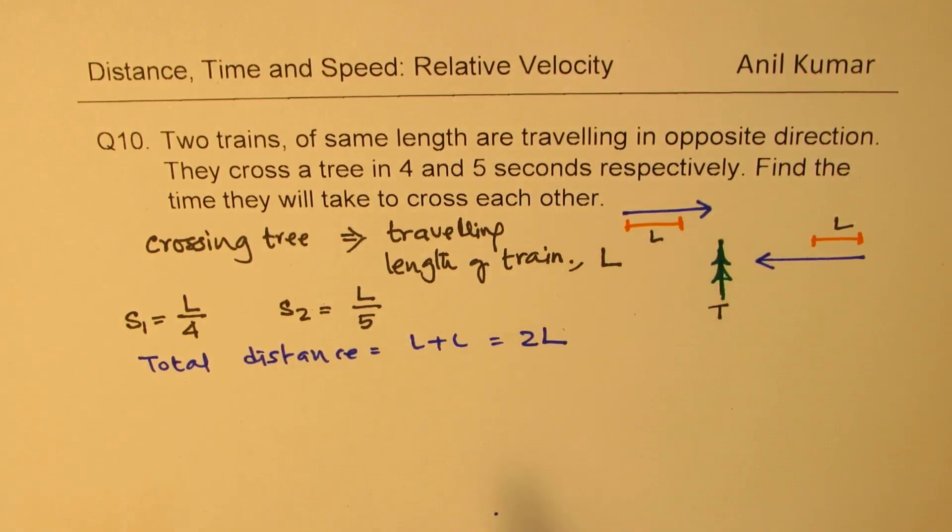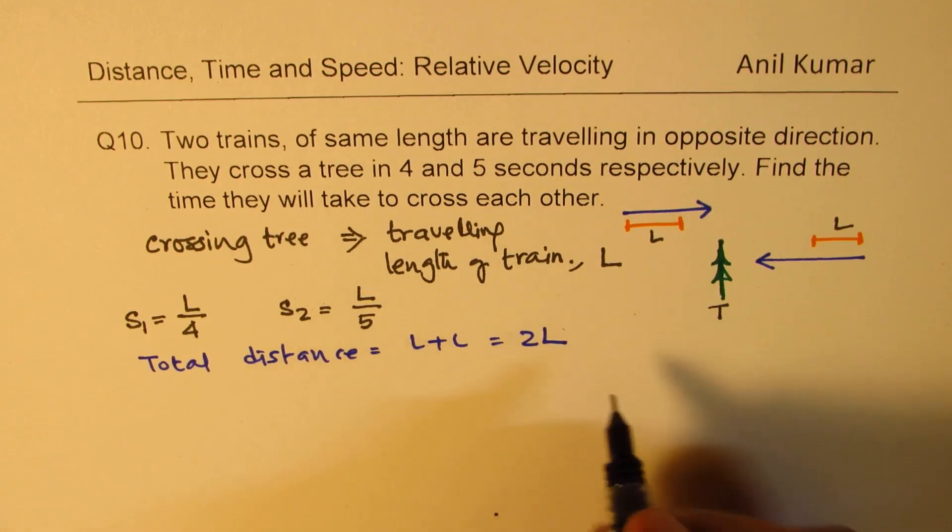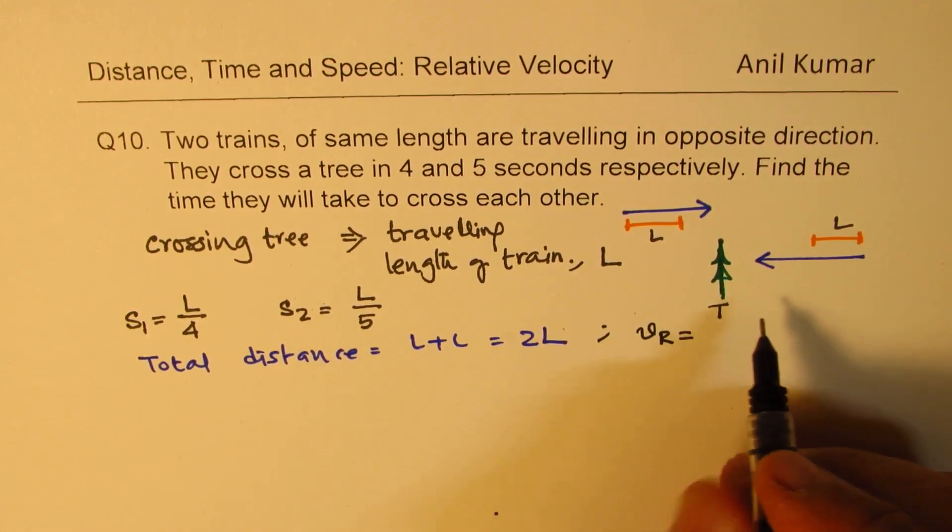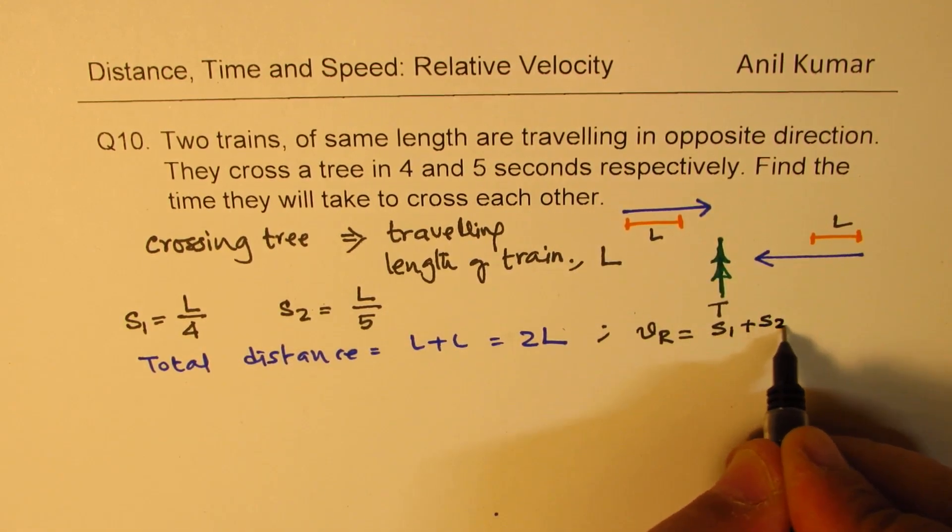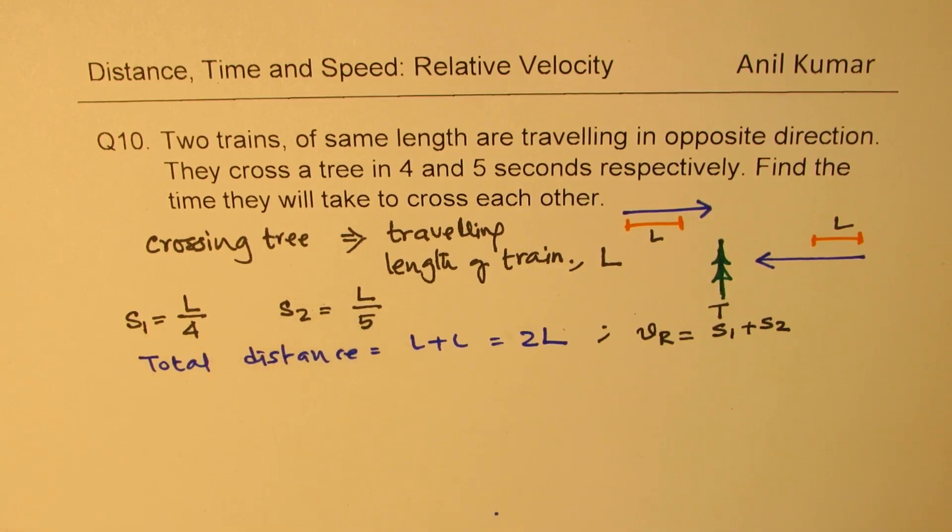Since they are moving in opposite directions, what is the relative velocity? Relative velocity will be add these two speeds, speed 1 plus speed 2. So you add these speeds.